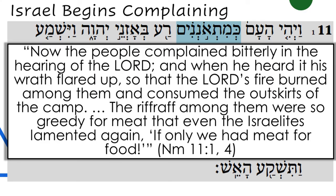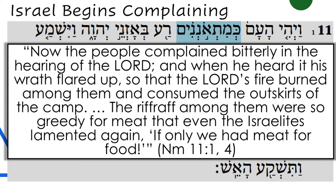Problems start to emerge. As we move to chapter 11, we hear the beginning of a whole lot of complaining in the wilderness. The riffraff among the people were so greedy for meat — they didn't like the manna — that even the Israelites lamented, 'If only we had meat for food.' The Lord would send meat in the form of quail, though He'd also send them a plague.